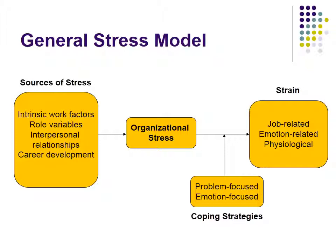This is the general stress model, which incorporates a lot of different models and research on stress. At the start on the left, we have the actual causes or antecedents of stress. It includes intrinsic work factors — basically the basic structure of the workplace itself. These are often unchangeable: if you work outdoors in the summer, heat is a source of stress; if you work in a loud environment, that noise is a stressor; if you work for low pay, that factors into stress. Role variables — the more your role is clearly defined and understood to have impact, the less stress you experience. The more ambiguous or frequently changing your role, the more stress.